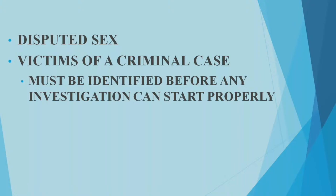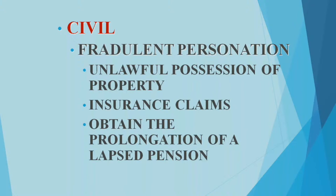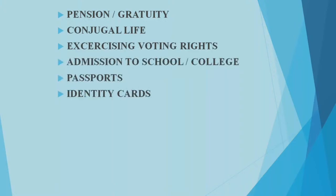Identification must be done in cases of criminal abortion — who the lady who aborted was, and the product of conception must be confirmed. It also helps fix the age of the criminal and their responsibilities according to their majority of age. In civil cases, fraudulent personation matters — such as unlawful possession of property — require identity confirmation. Insurance cases and prolongation or lapse of pension are also relevant.